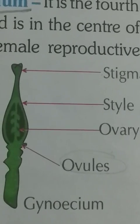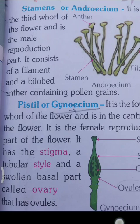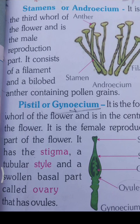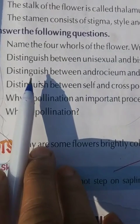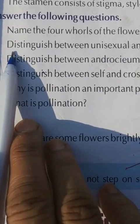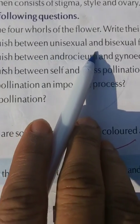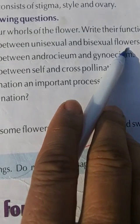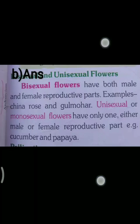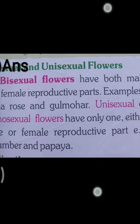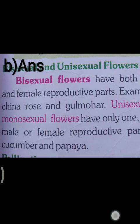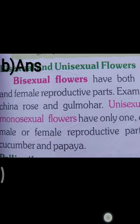It is the female reproductive part of the flower. It has the stigma, a tubular style, and the swollen basal part called ovary that contains ovules. B: distinguish between unisexual and bisexual flowers. Second answer: bisexual flowers have both male and female reproductive parts, for example china rose and gulmohar.